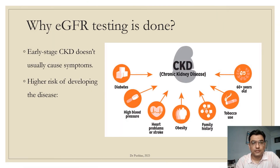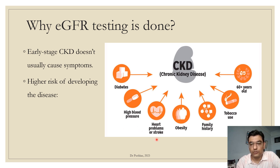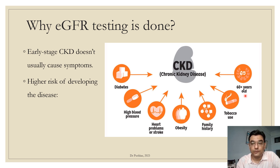In the early stages of CKD, patients usually do not show symptoms. If a patient is diabetic, their kidneys get damaged slowly, and we must estimate the eGFR to assess kidney conditions. Other risk factors include high blood pressure, heart problems, stroke, obesity, family history, tobacco use, and age 60 or above. In all these cases we need to estimate eGFR.